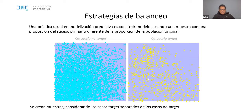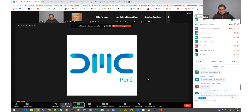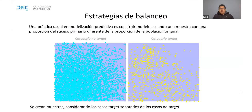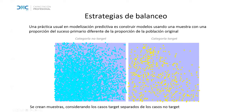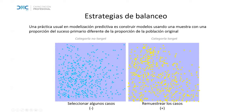¿Qué estrategias se utilizan para corregir esta situación? Podemos tomar distintas estrategias. Tenemos el balanceo, con distintos tipos que básicamente consisten en separar los casos: filtrar o reducir los casos más abundantes — los no target — o remuestrear los casos de la categoría minoritaria, replicando observaciones. Incluso hay alternativas en las que no se repite sino que se hace un aumentado de la muestra.